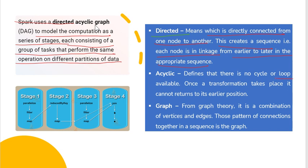No loop. Once the transformation takes place, it cannot be returned to its earlier position because it's immutable. So it is called acyclic, there is no cycle and there is no loop.